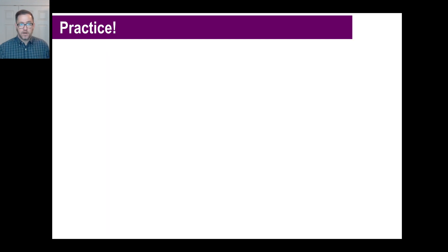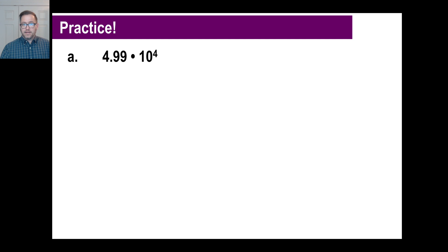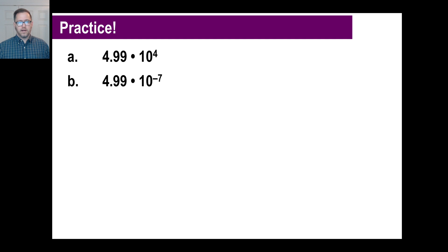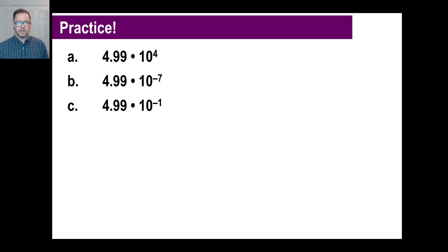Try the practice problems — there are three of them, give them a shot. Try A first, pause it. A is 4.99 times 10 to the 4th power. Pause it and try B. B is 4.99 times 10 to the negative 7th power. If you didn't understand why, try it one more time — look at your decimals, count those things, understand what you're doing, go back to the previous page to help you. Pause it and try C. Last one will be 4.99 times 10 to the negative 1 power. Alright, see you next time, have a good day.